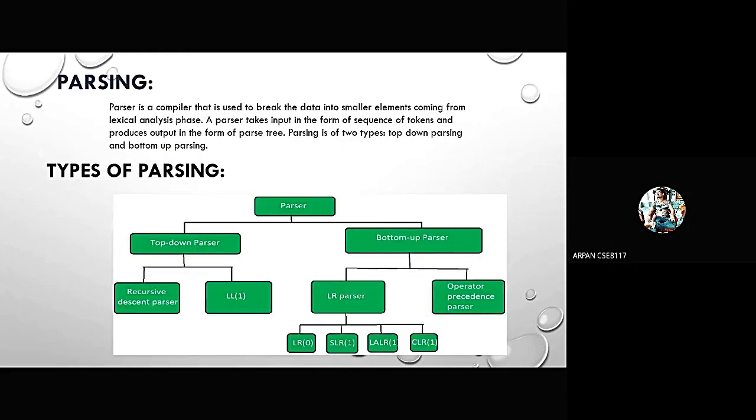Now we will learn about parsing. Parsing is a compiler that is used to break the data into smaller elements coming from lexical analyzing phase. A parser takes input in the form of a sequence of tokens and produces output in the form of a parse tree. Parsing is of two types.